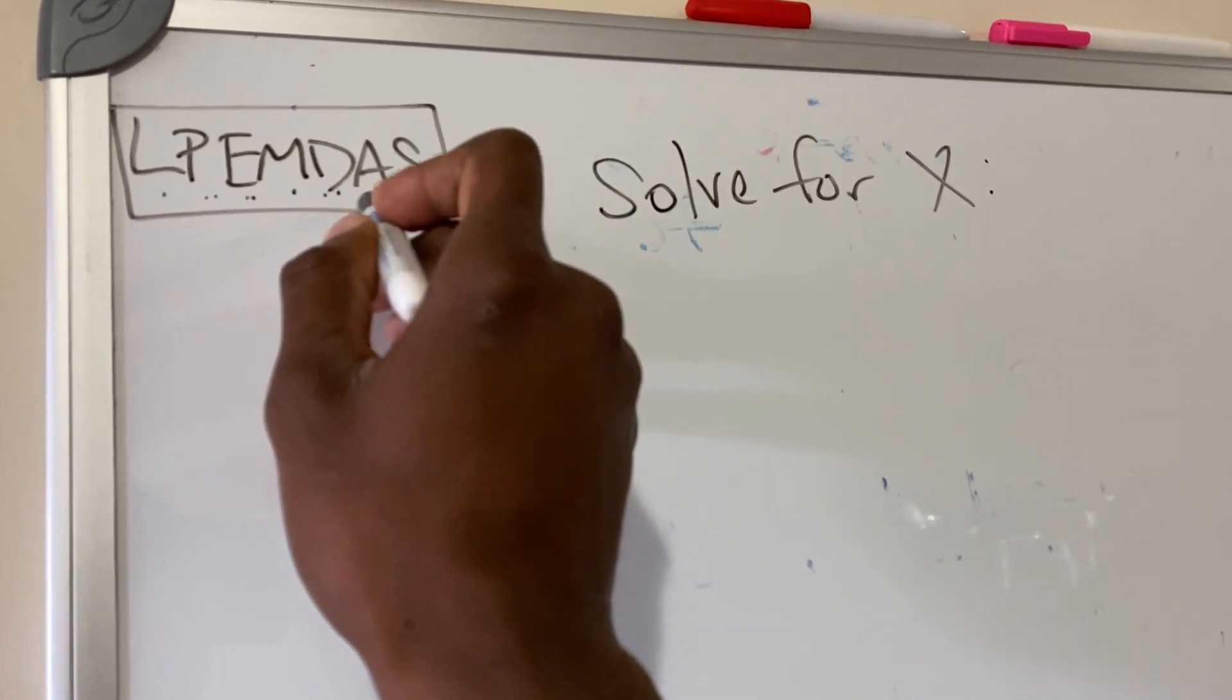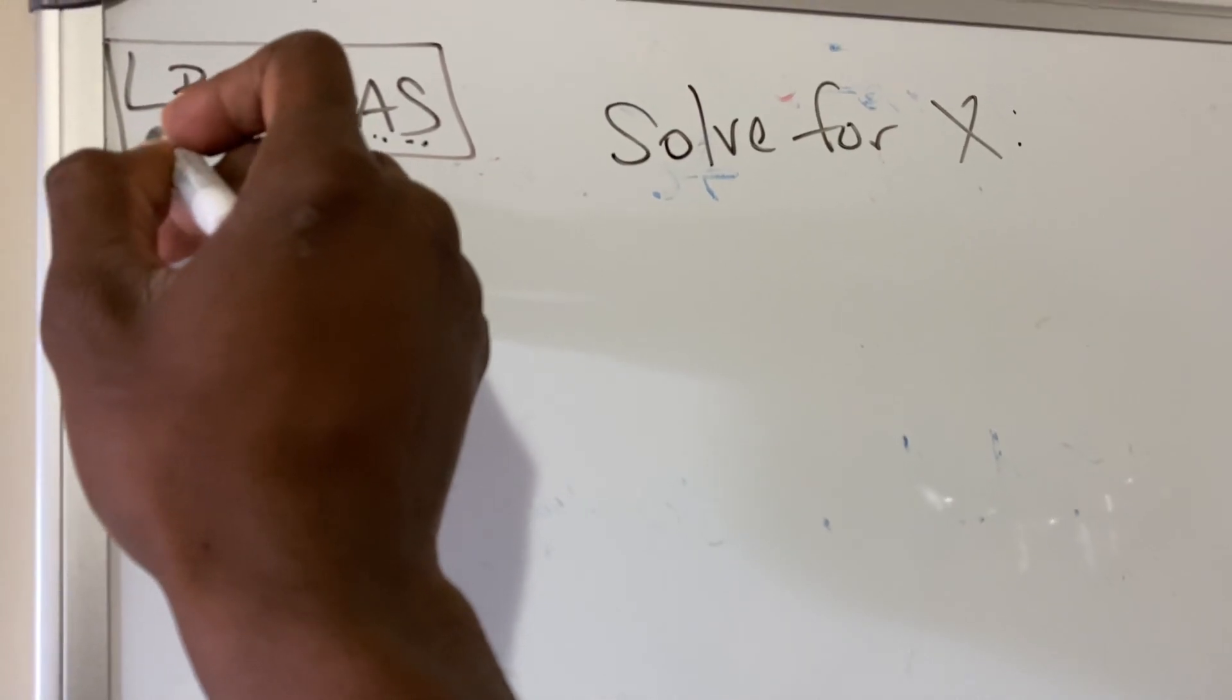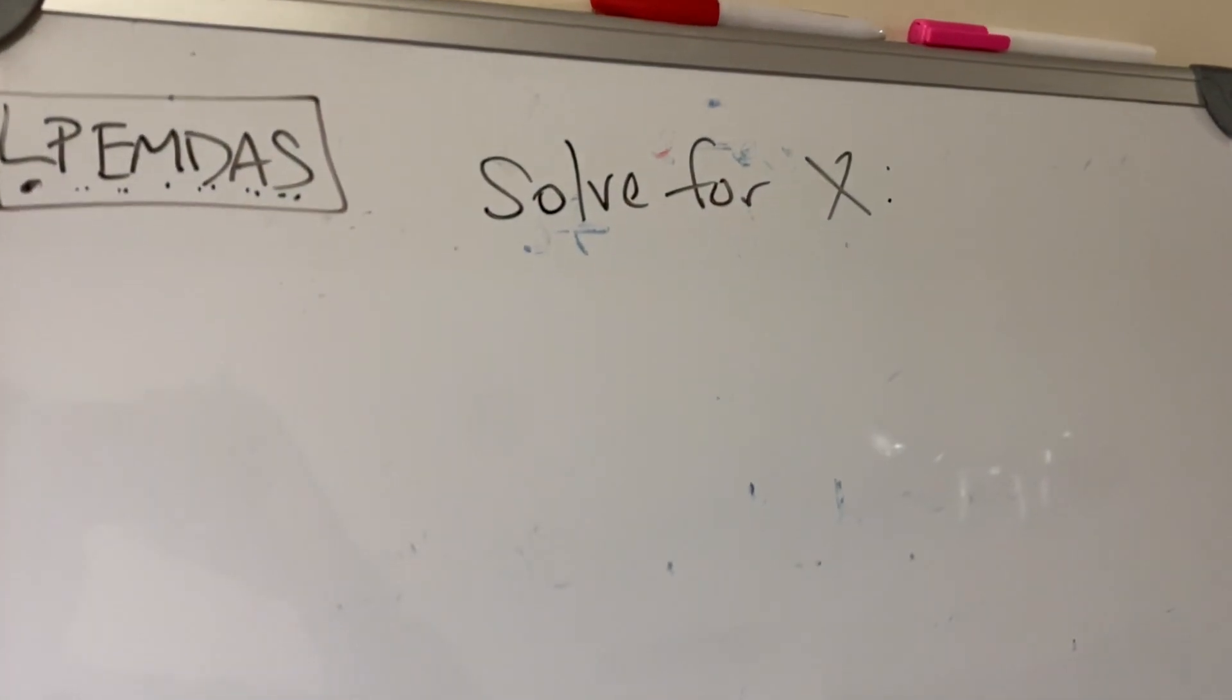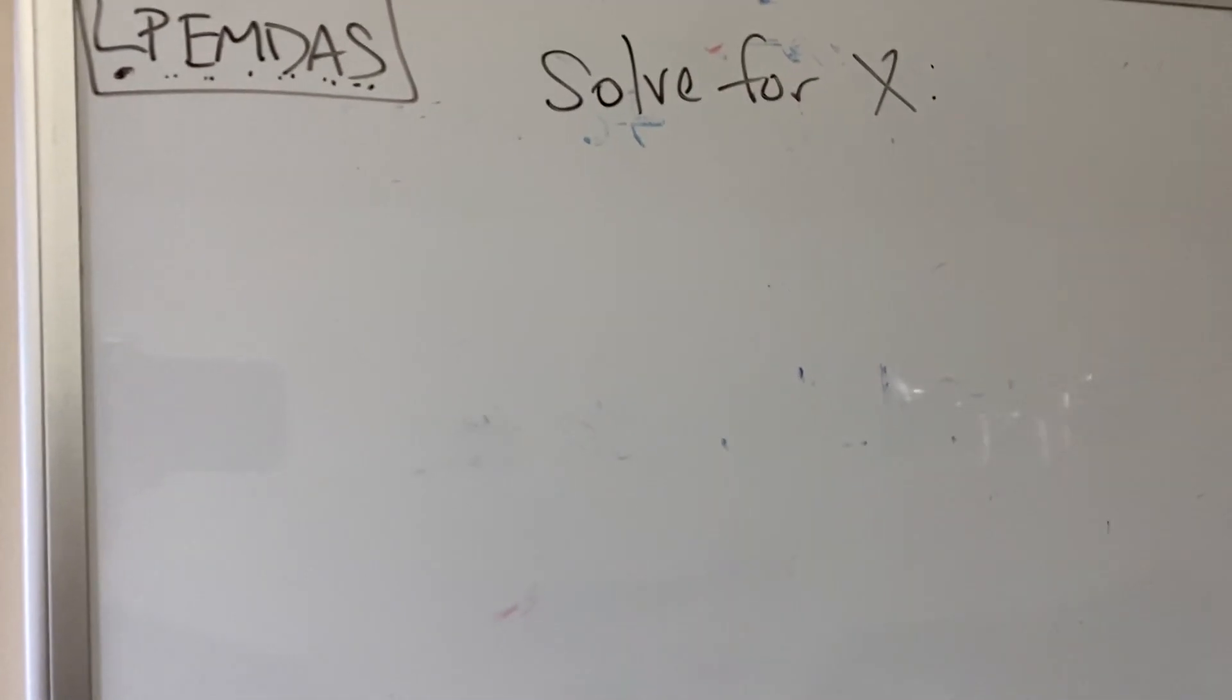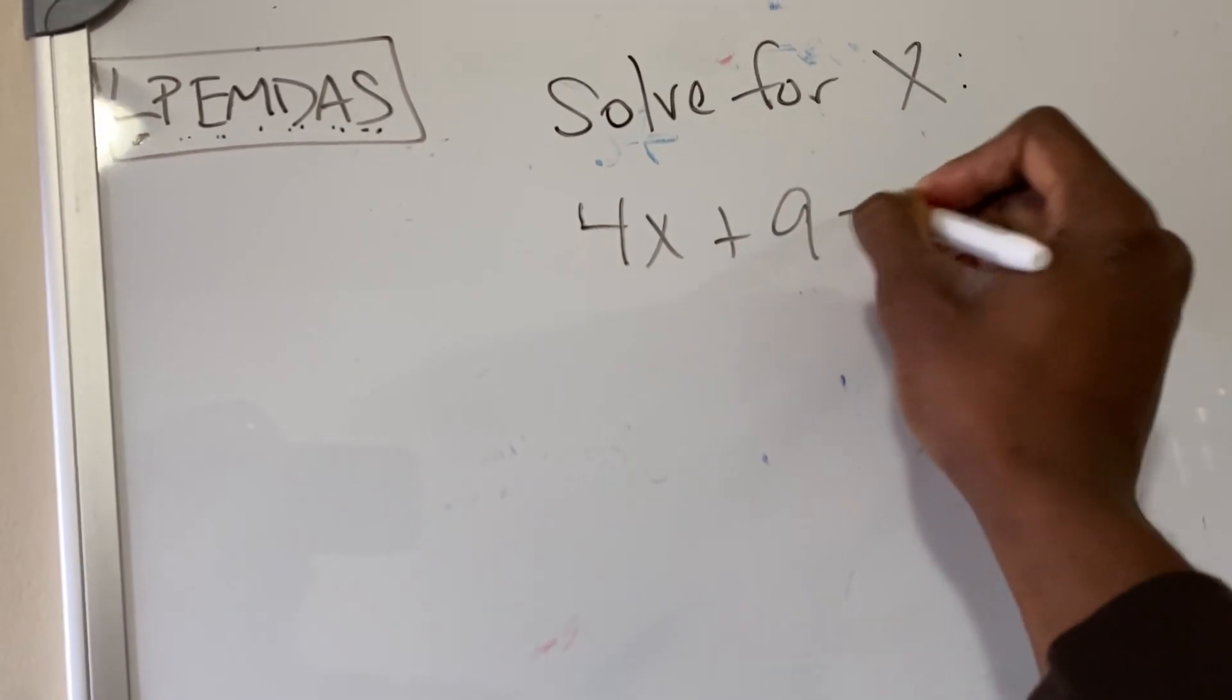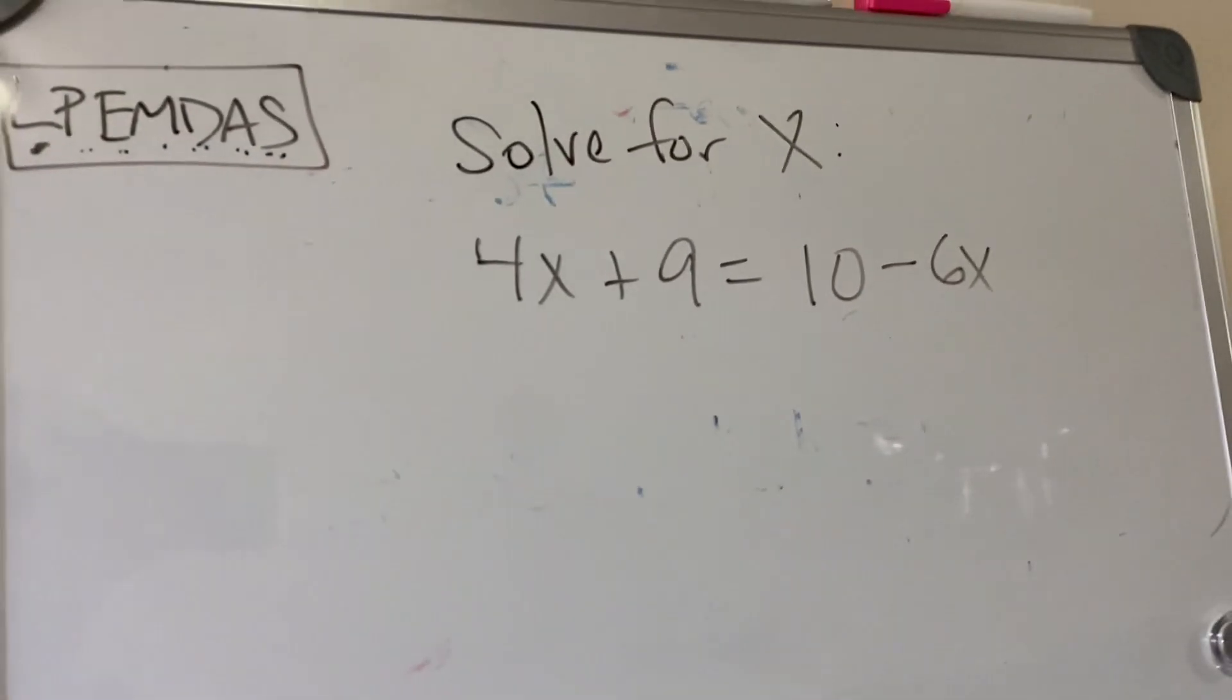But a lot of folks forget about the like terms, so we just go French style, which is really not, it's my style, LEMDAS. Alright, so let's say we had a situation where we had 4x plus 9 equals 10 minus 6x, right?